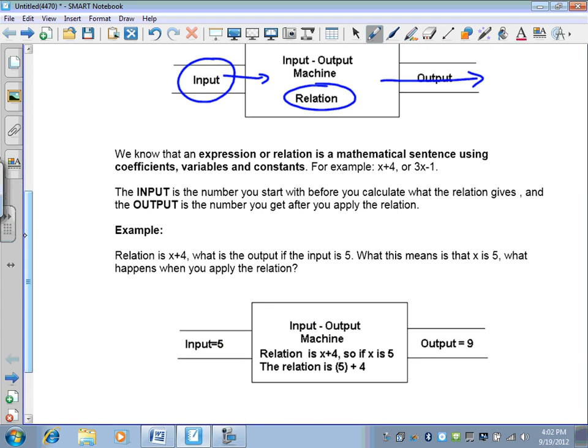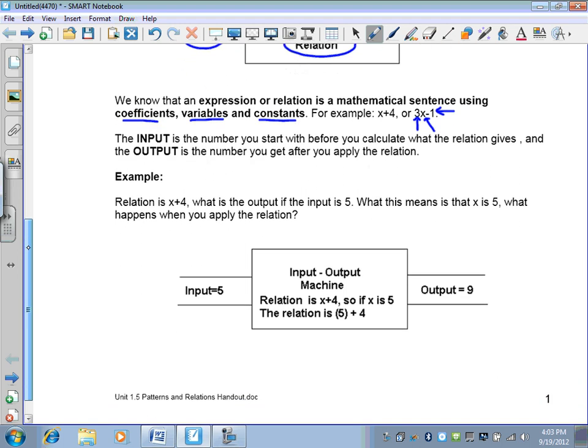We know that an expression or a relation is a mathematical sentence using coefficients, variables, and constants. The coefficient is the number in front of the variable, the variable is the letter, and the constant is the number which is by itself. The input is the number you start with before you calculate the relation, and the output is the number you get after you apply a relation.